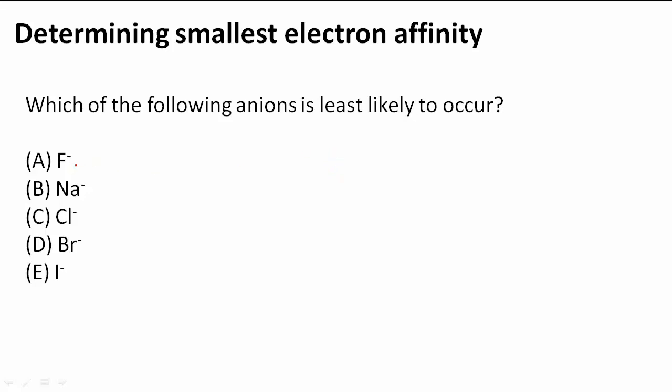We know that F, Cl, Br, and I are all halogens and they have seven valence electrons and want one additional electron. So they have high electronegativities and are going to take another electron.